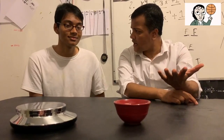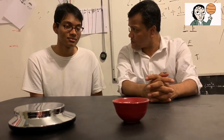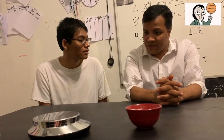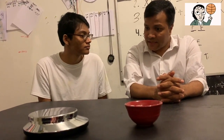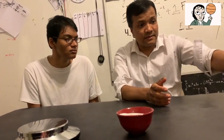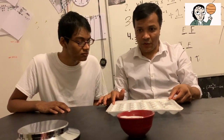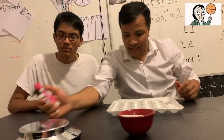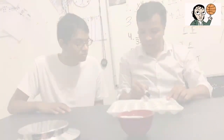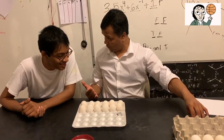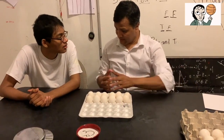Today we're going to learn amount of substance — the SI unit for amount of substance is mole. The amount of substance refers to the number of things. For example, the number of eggs. Instead of saying 12 eggs, because 12 eggs is a mouthful, what else can you say?